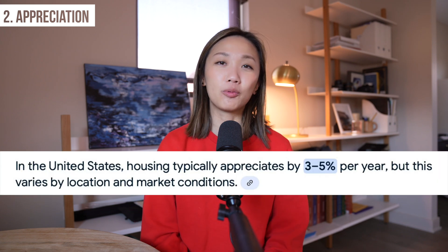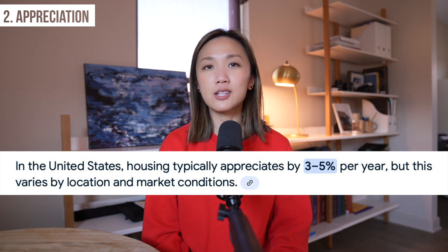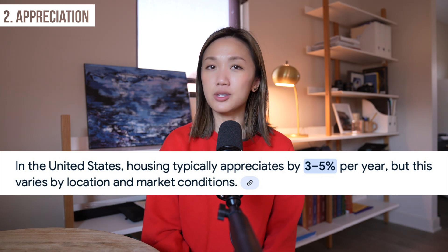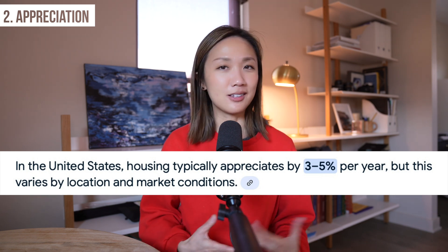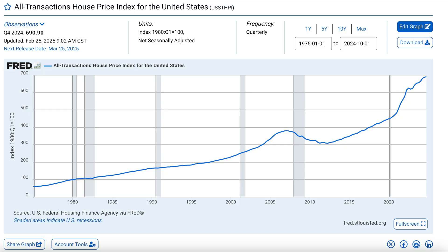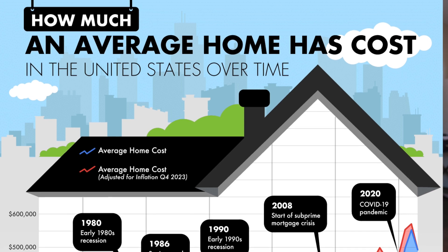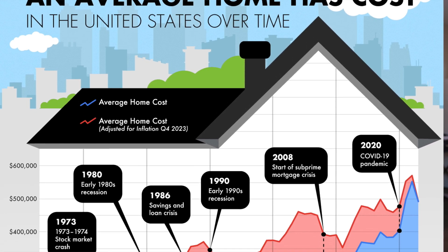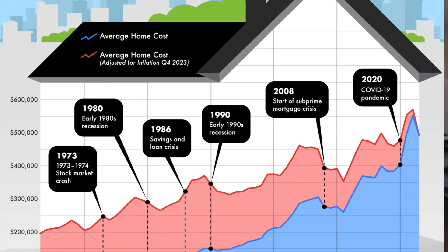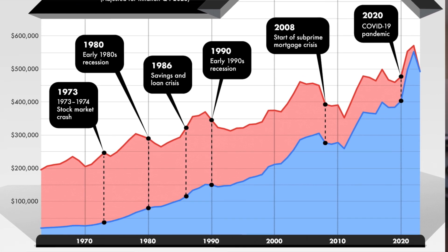Appreciation refers to the increase in property value over time. Historically, for residential real estate in the U.S., it has been 3% to 5% per year. However, this increase is not guaranteed — it varies by year, it varies by market. And keep in mind, after adjusting for inflation, appreciation is actually quite modest and even flat sometimes. In my opinion, appreciation alone is not big enough gains to be worth the hassle of investing in real estate.